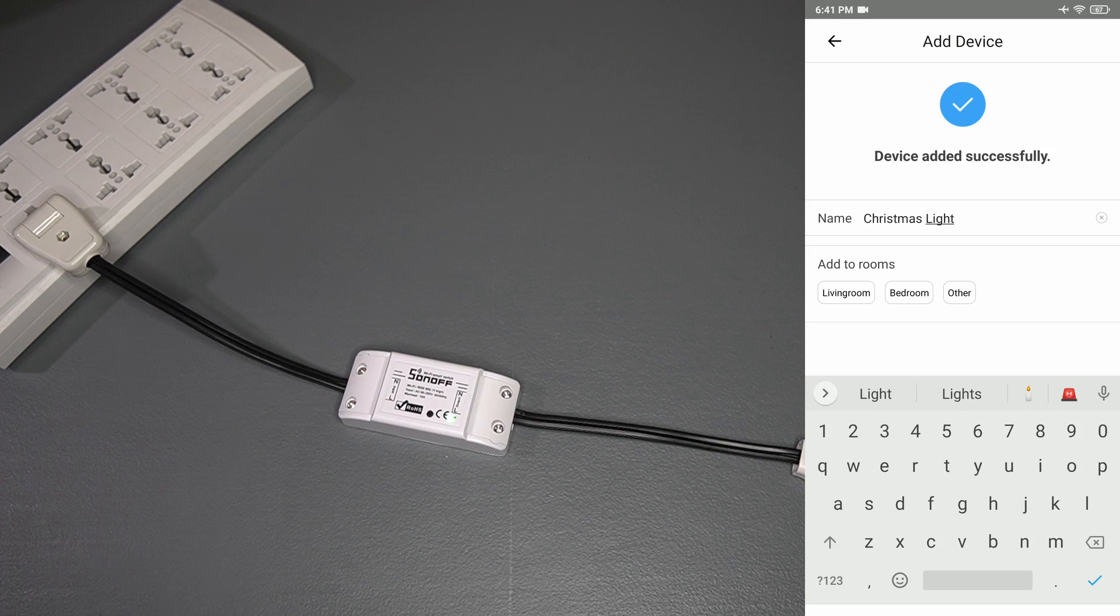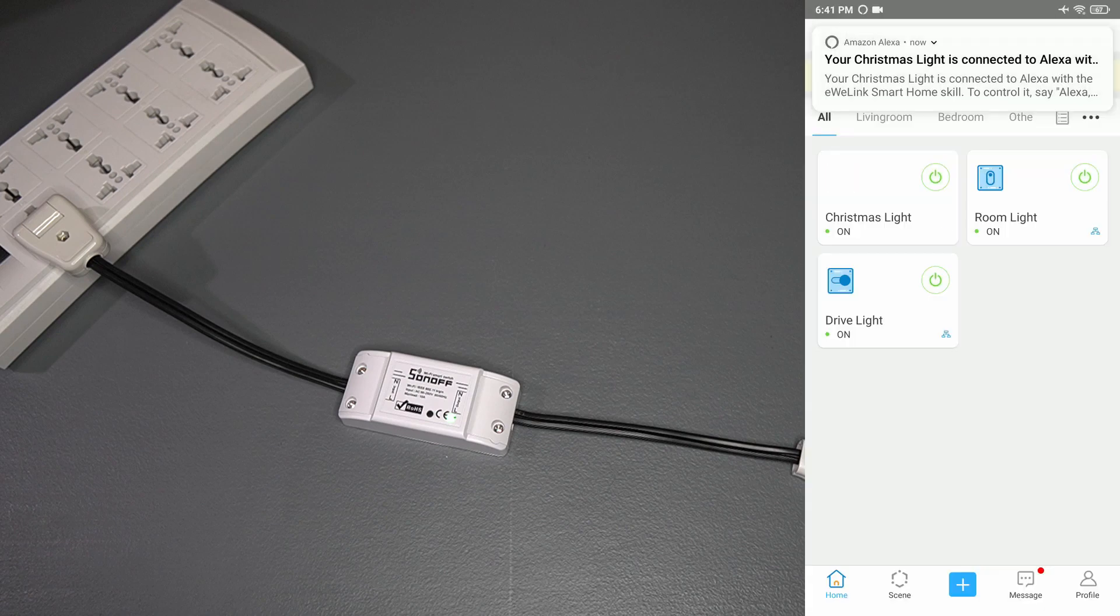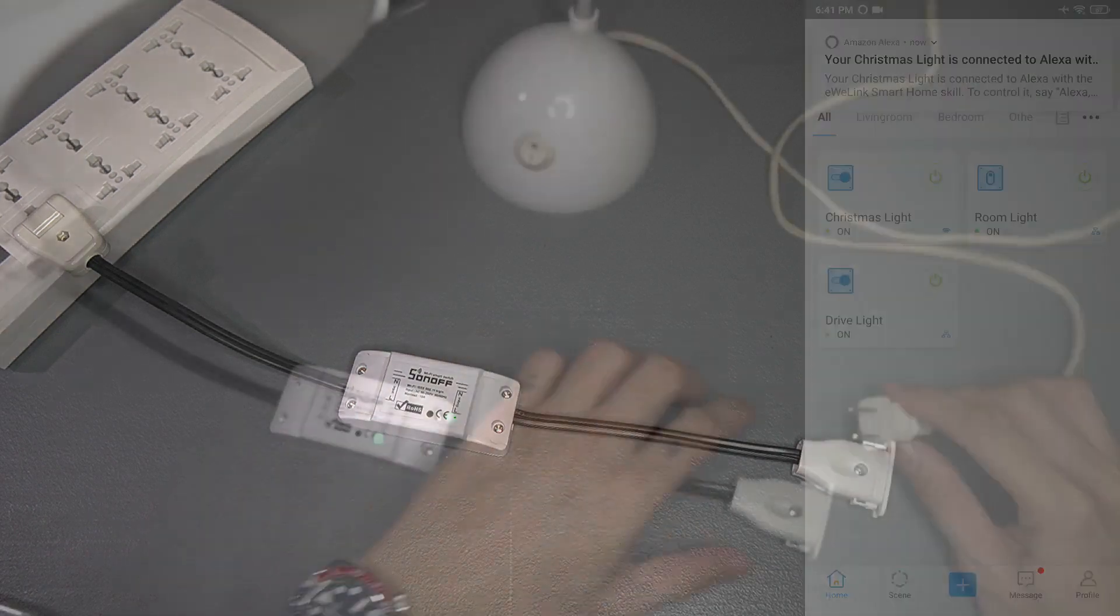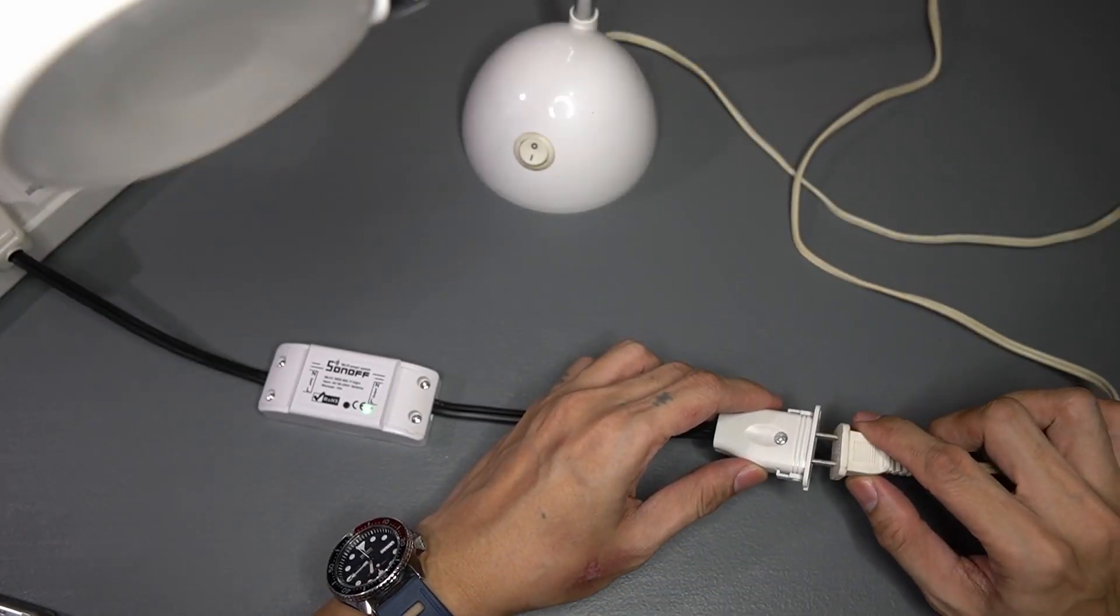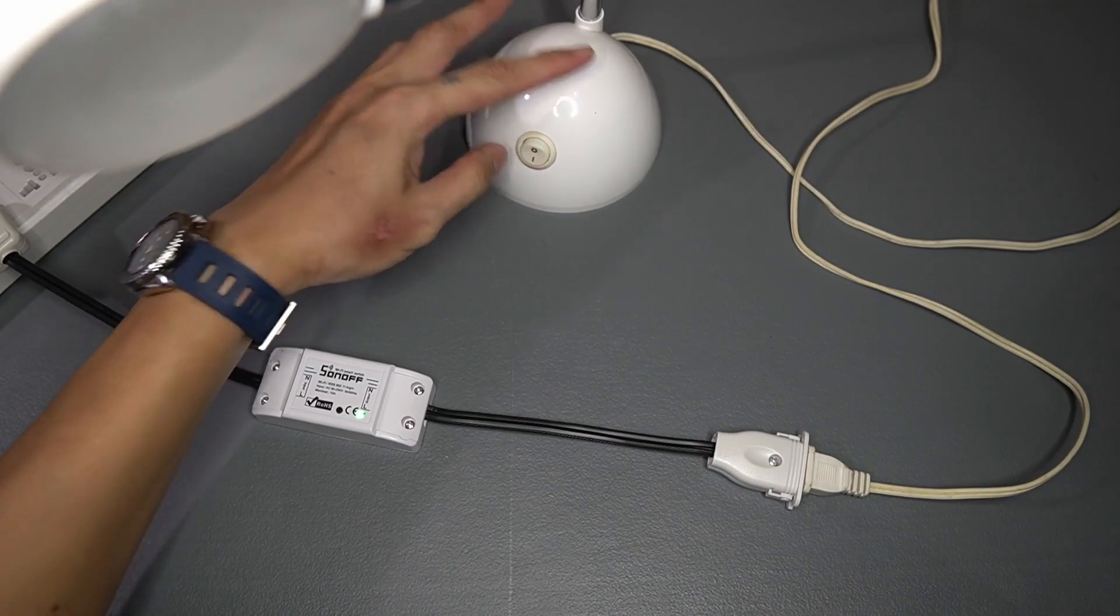Name your device to anything you want and click Done. Click Got It, and you are now back to the home screen. Plug the device you want to control to the single socket connected to the Sonoff. Let's test the device, shall we?